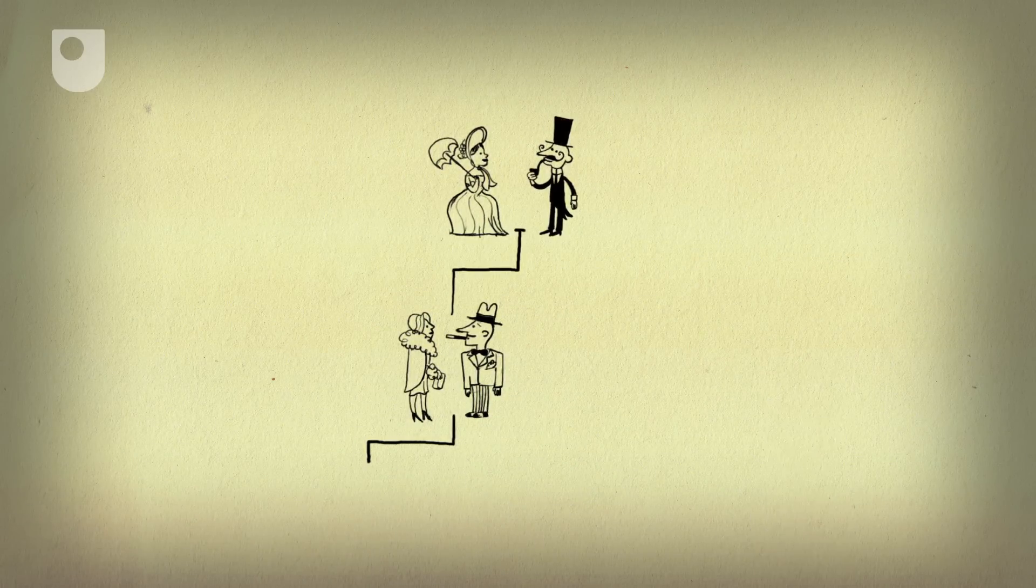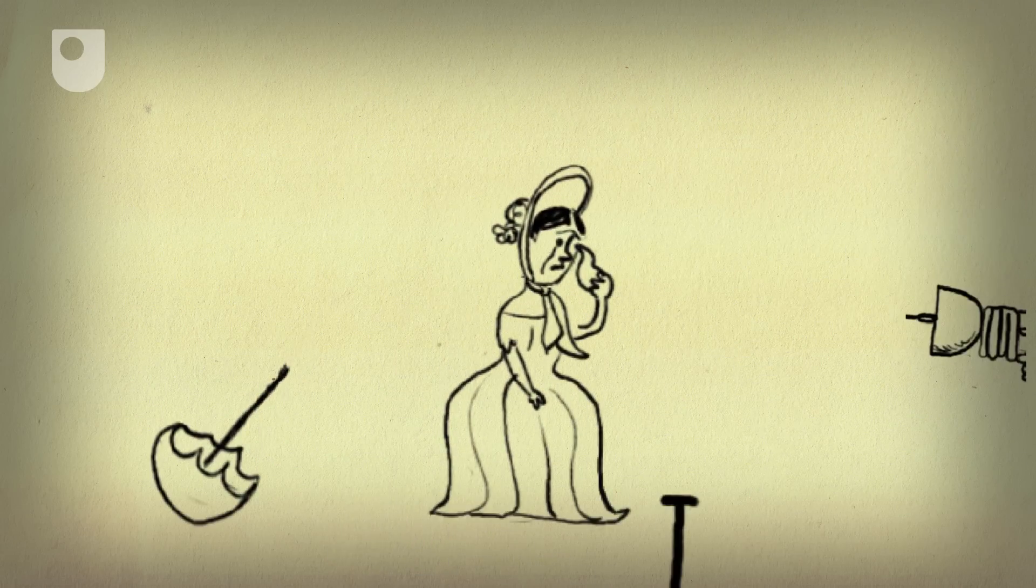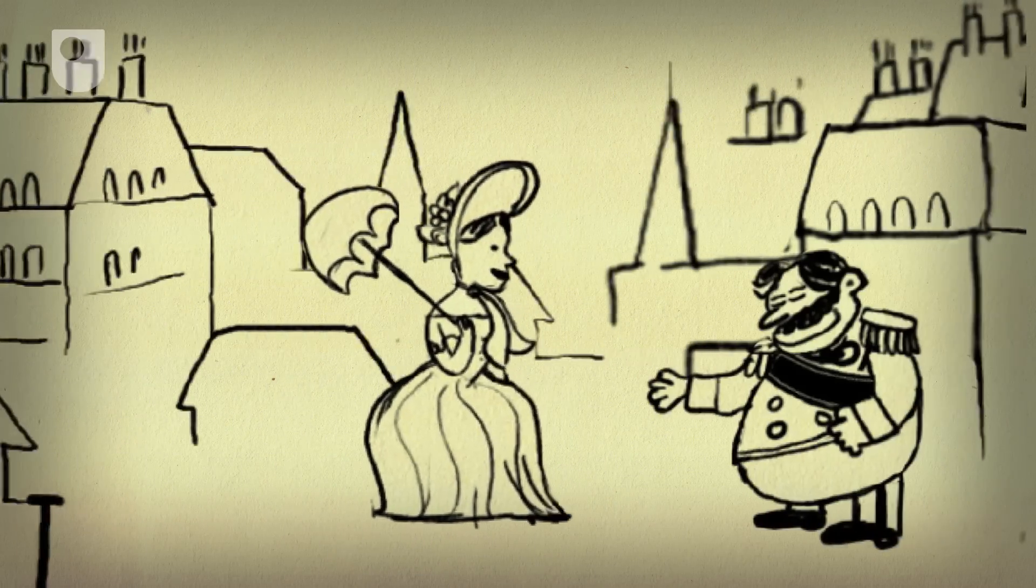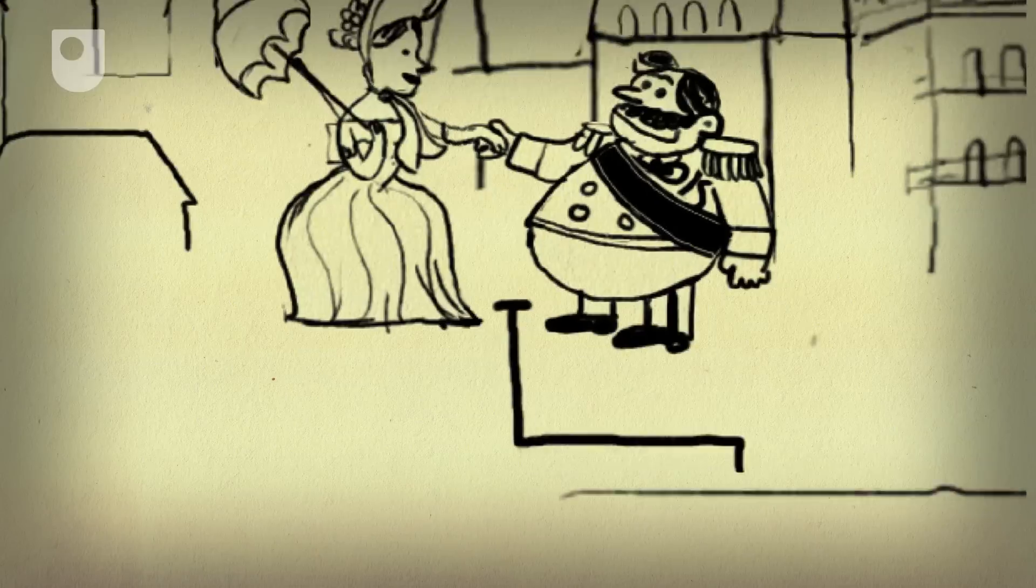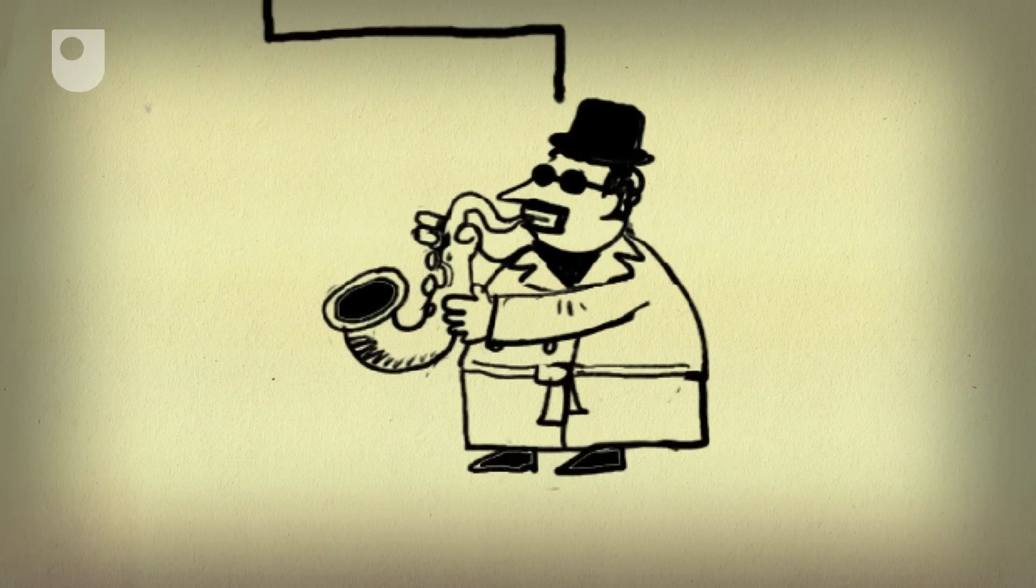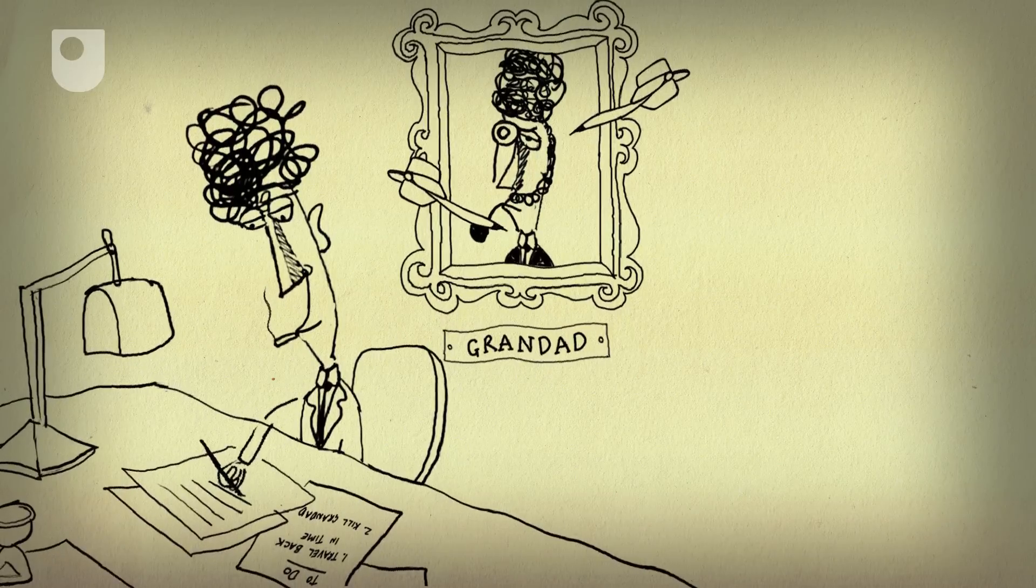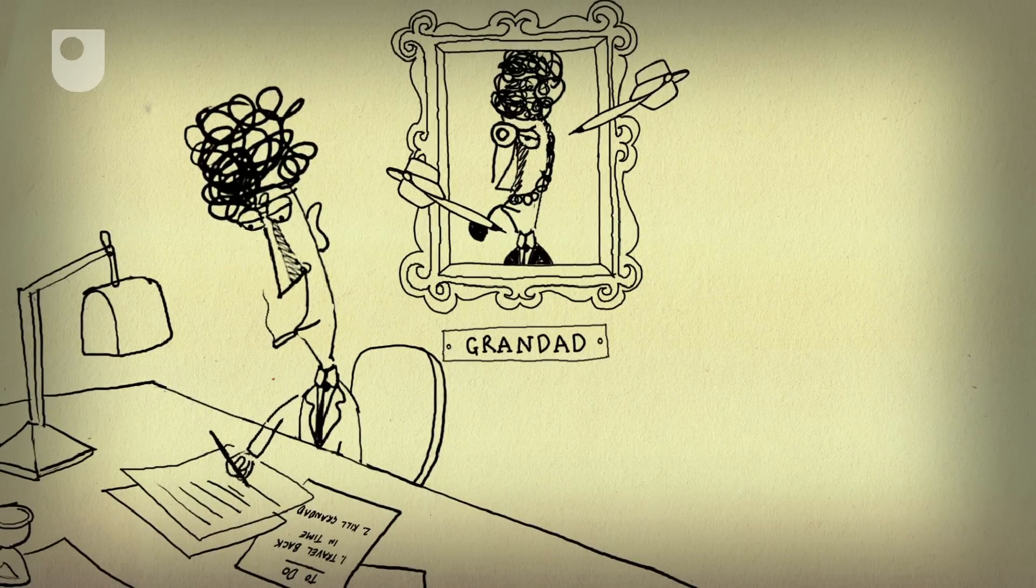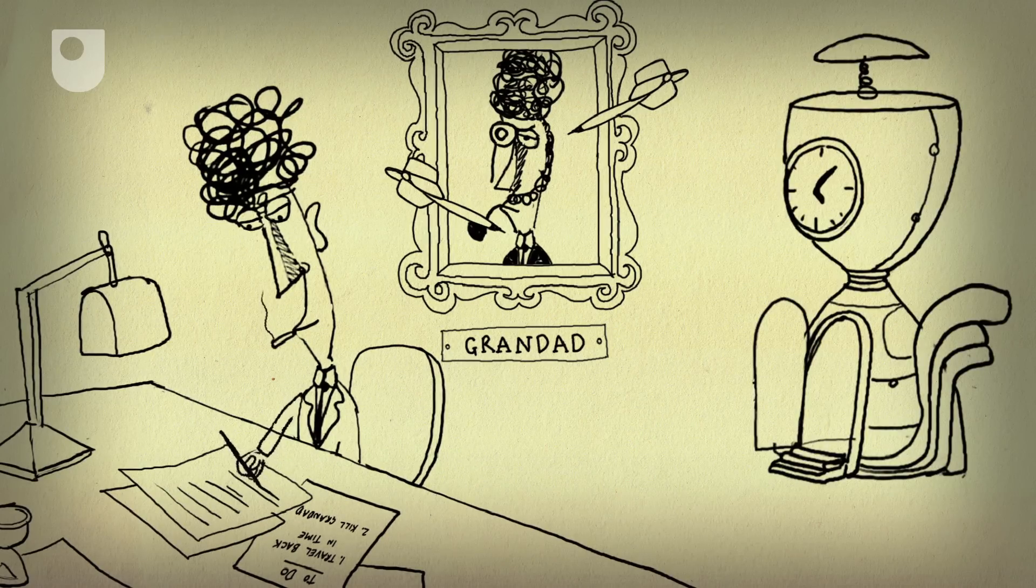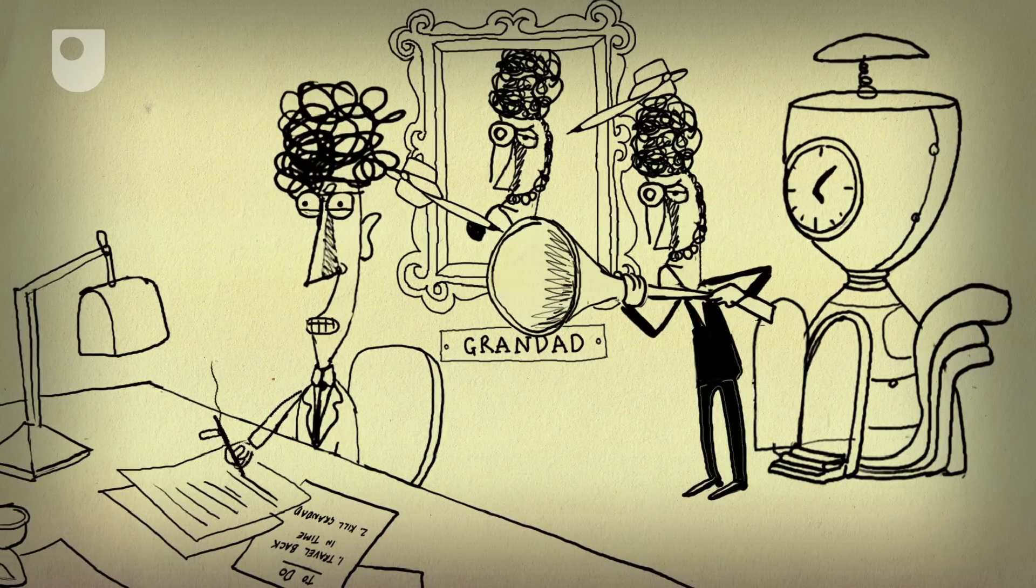Some people have tried to defend time travel with arguments like the Parallel Universe Resolution, in which the changes made by the time traveller create a new, separate history branching off from the existing one. But the Grandfather Paradox prevails. Although the paradox only suggests that travelling backwards in time is impossible, it doesn't say anything about going the other way.